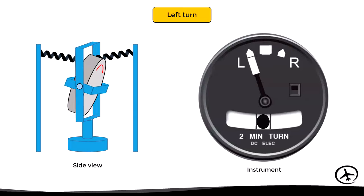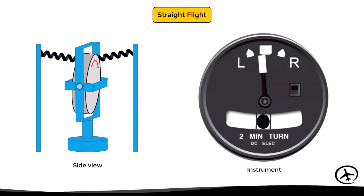This continues until the aircraft stops turning. Then the precession stops and the springs return the gyro to the neutral position.